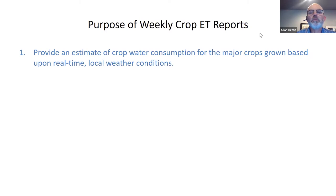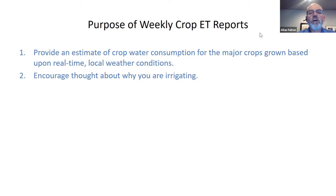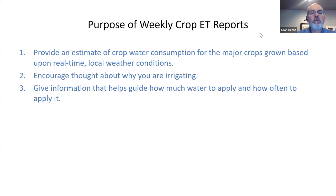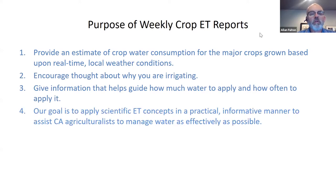The purpose of these weekly crop ET reports includes providing an estimate of crop water consumption for the major crops grown in our areas based upon real-time local weather conditions. Our goal is to encourage thought about why you are irrigating, and this information should help guide how much water to apply and how often to apply it. Our goal is to apply scientific concepts on evapotranspiration, abbreviated as ET, in a practical, informative manner to assist California agriculturalists to manage water as effectively as possible.